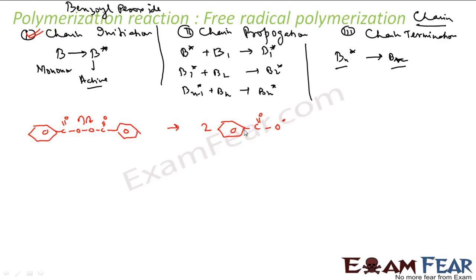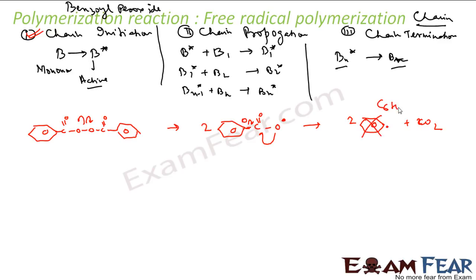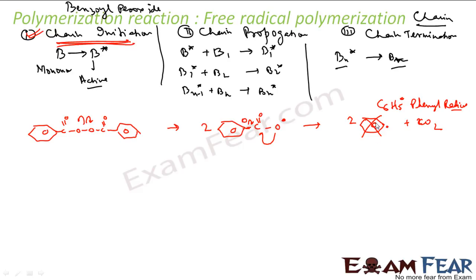Two of these molecules are formed, and carbon dioxide will come out because it is not stable — the C-O bond will break again. This gives us a phenyl radical, written as C₆H₅ with a radical dot. This is called the phenyl radical. I have now got this phenyl radical, which is active.